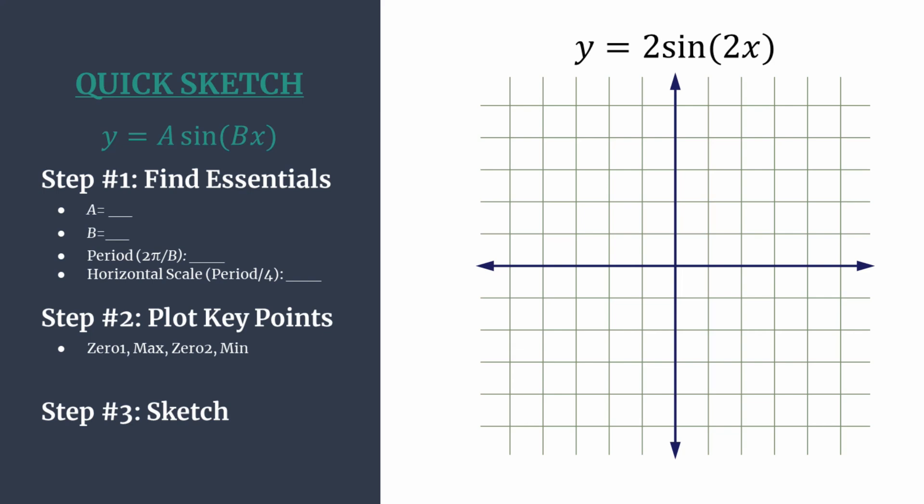In step 1 we find the essentials, starting with a, or the coefficient out in front of sine. In our equation that's a 2. This is the value of the amplitude, or the distance from the midline of the graph up to a maximum or down to a minimum. That's going to help us set the y-coordinate of our maximum and minimum key points in step 2.